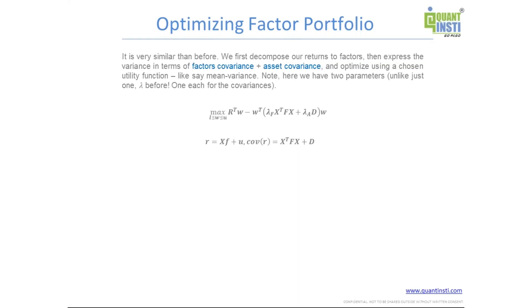So necessarily we have different lambda as well for that, the sensitivity to each of these factors that you want to optimize. So one is the factor lambda, one is the asset lambda. So again, we can just normalize, optimize this expression and come up with the factor allocation. So it's not very significantly different.